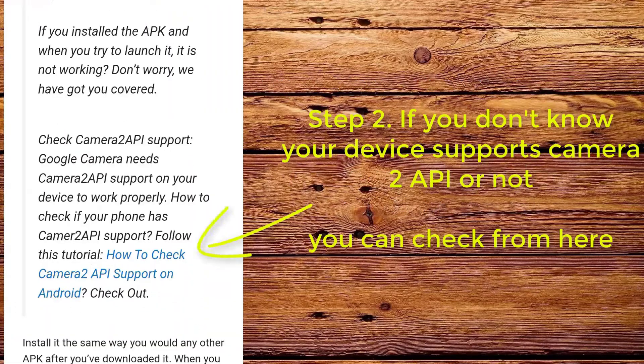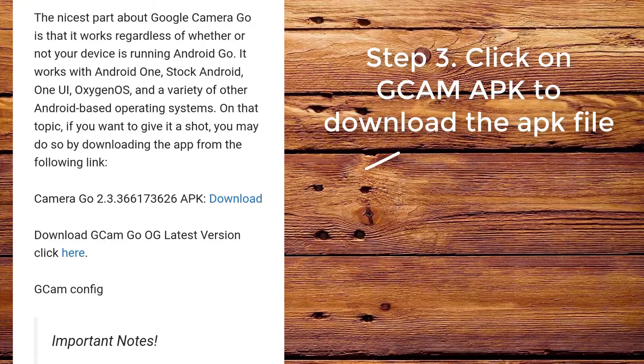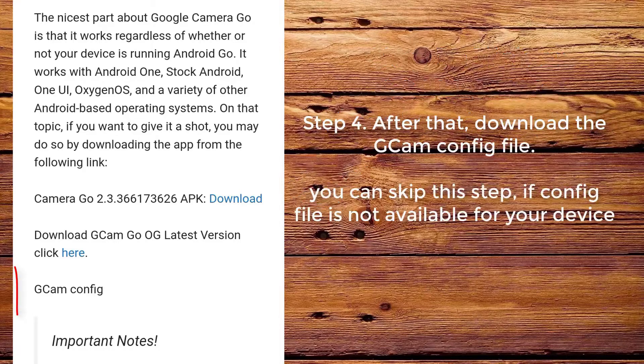Step 2: If you don't know whether your device supports Camera2 API or not, you can check from here. Step 3: Click on CamApp to download the app file.